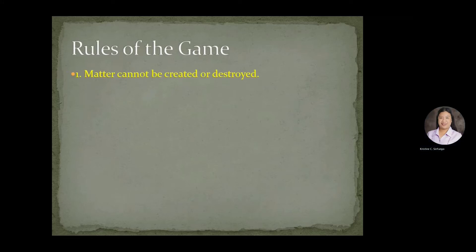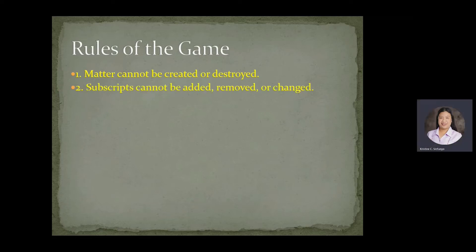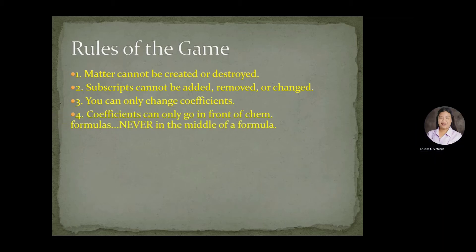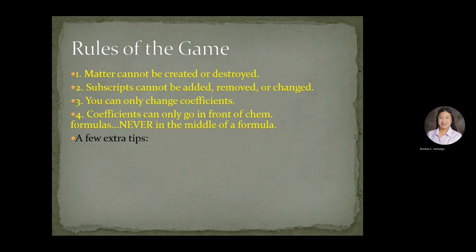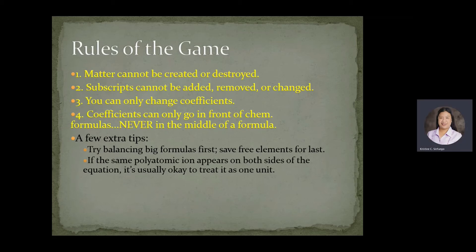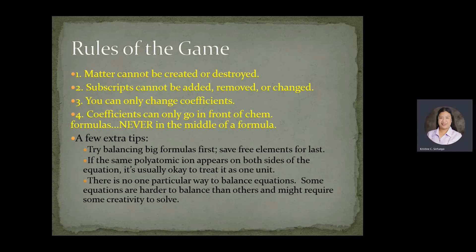What are the rules? First, matter cannot be created or destroyed. Subscripts cannot be added, removed, or changed — you can only change the coefficients. Coefficients can only go in front of chemical formulas and never in the middle of a formula. A few extra tips: try balancing big formulas first, then save free elements for last. If the same polyatomic ion appears on both sides, treat it as one unit. Balancing equations is a trial-and-error activity — some are harder than others and require patience and creativity.